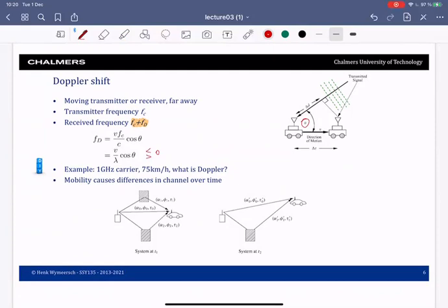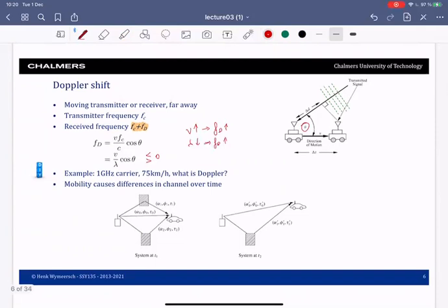When velocity increases, the Doppler shift increases. When lambda decreases, the Doppler shift also increases. This means that systems with high carrier frequencies which have smaller lambdas will suffer from higher Doppler frequencies. To get a feeling of how important these Doppler frequencies are, consider this example where we have a 1 gigahertz carrier, a user moving at 75 kilometers per hour, and the question is: what is the Doppler? You can try to solve this yourself and then come back to the video.